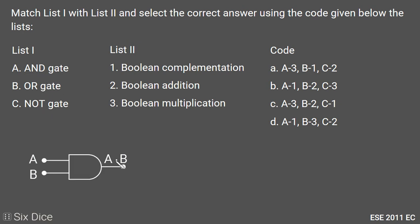AND gate's output is a multiplication of A and B. So AND gate is a Boolean multiplication.